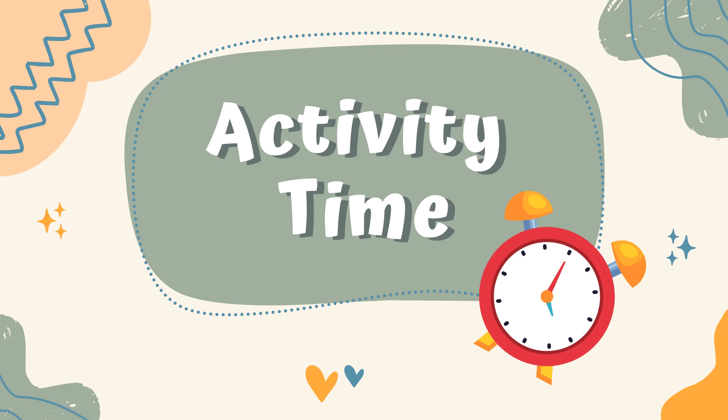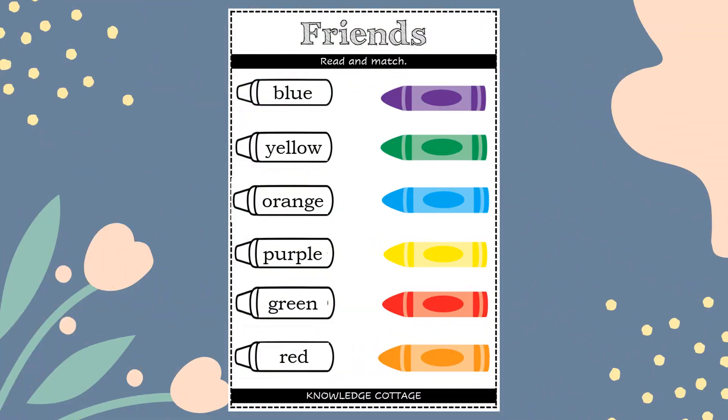Now let's jump into our activity. This is the worksheet we are going to use. To download this worksheet, you can go to the description box below and click on the link given. Now students, all you have to do is read and match. Read the colours given, find the correct crayon and match. Shall we start?